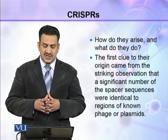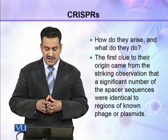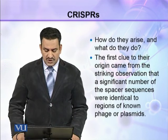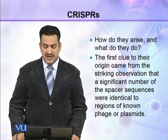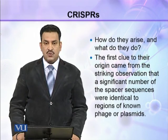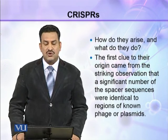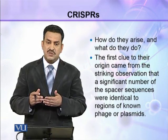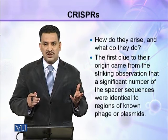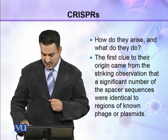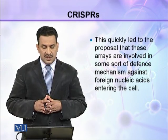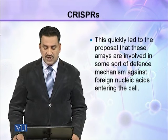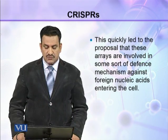The question arises: how do CRISPRs arise, and what do they do? The first clue to their origin came from the striking observation that a significant number of the spacer sequences were identical to regions of known phages or plasmids. These CRISPR sequences are similar to known sequences found in phages or plasmids.